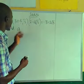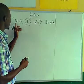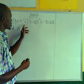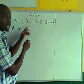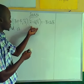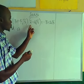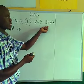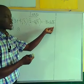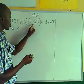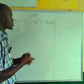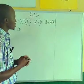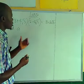The question is: if (3 + 4√3)(2 - a√3) equals minus 18 plus 2√3, we are looking for the value of a.